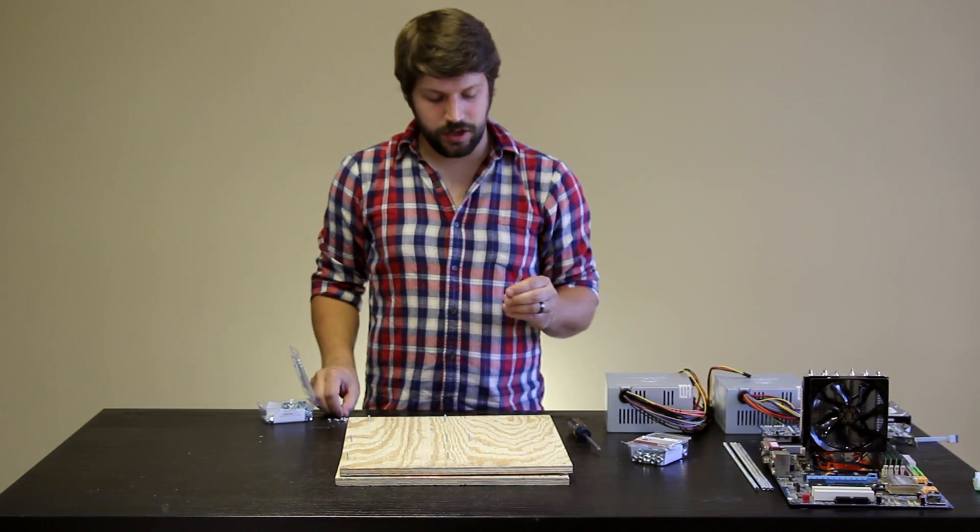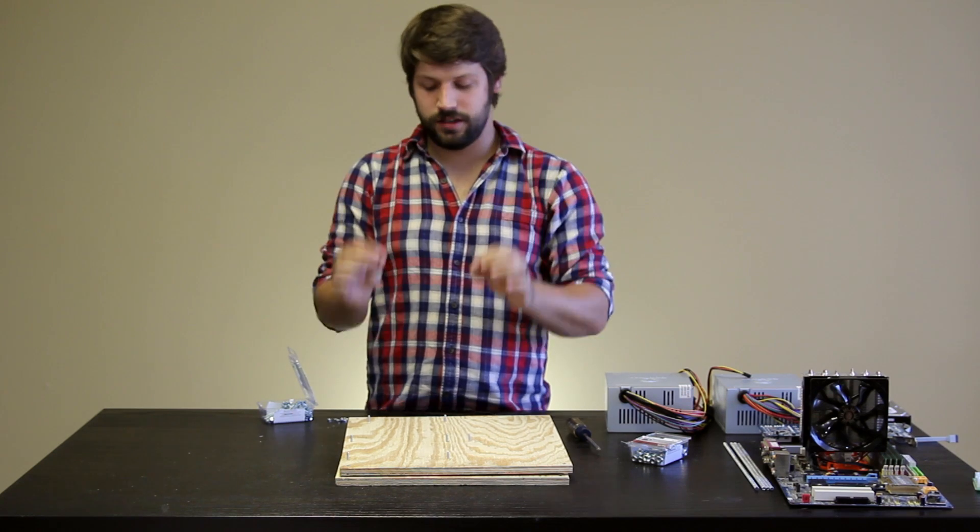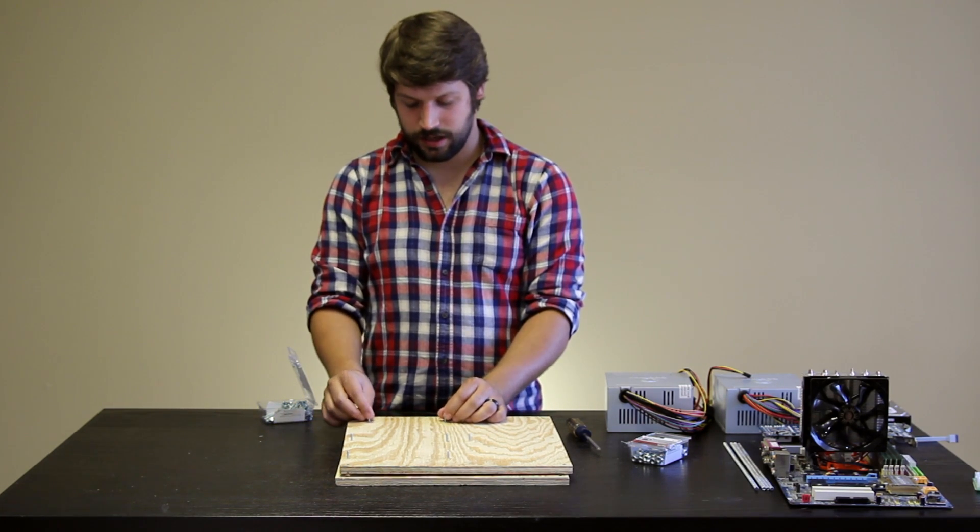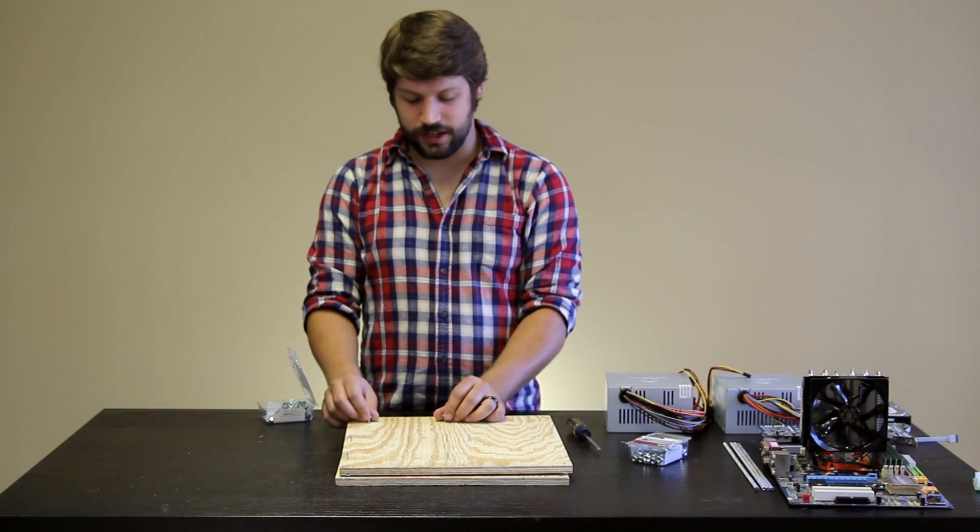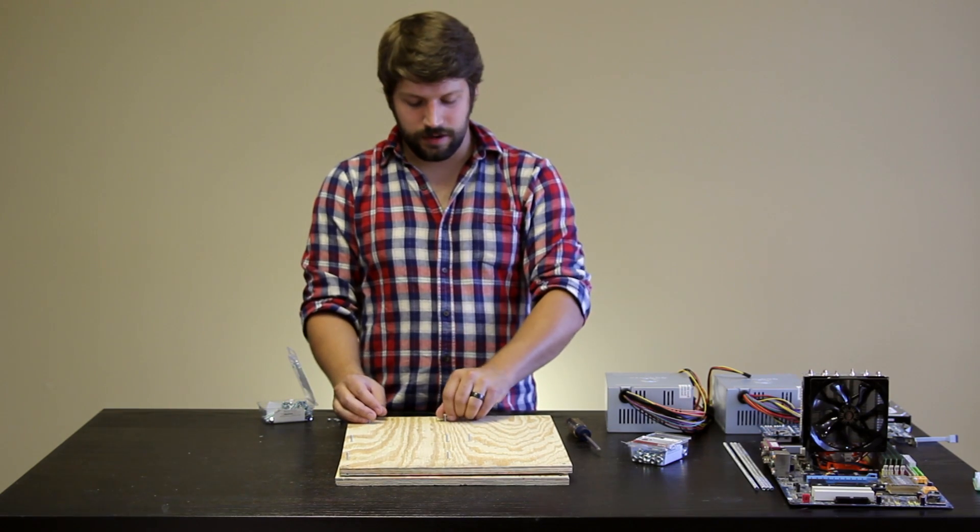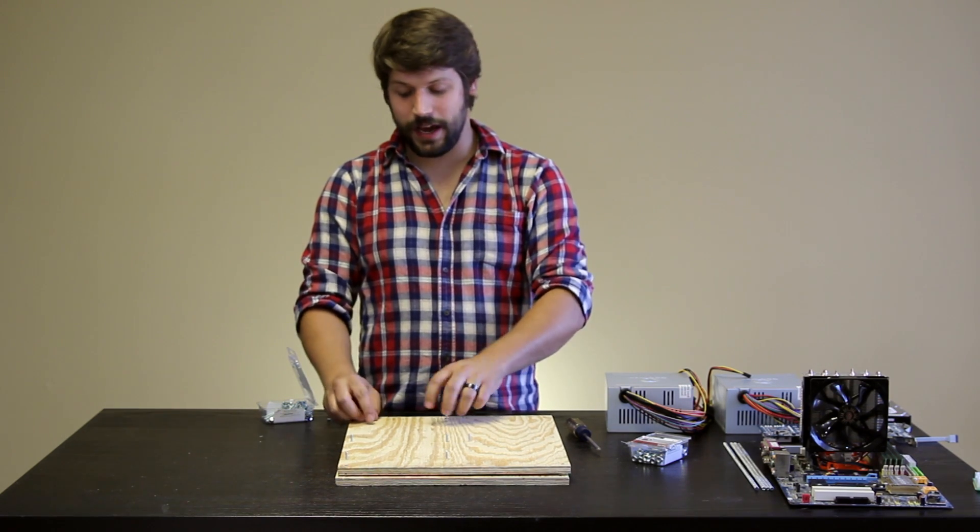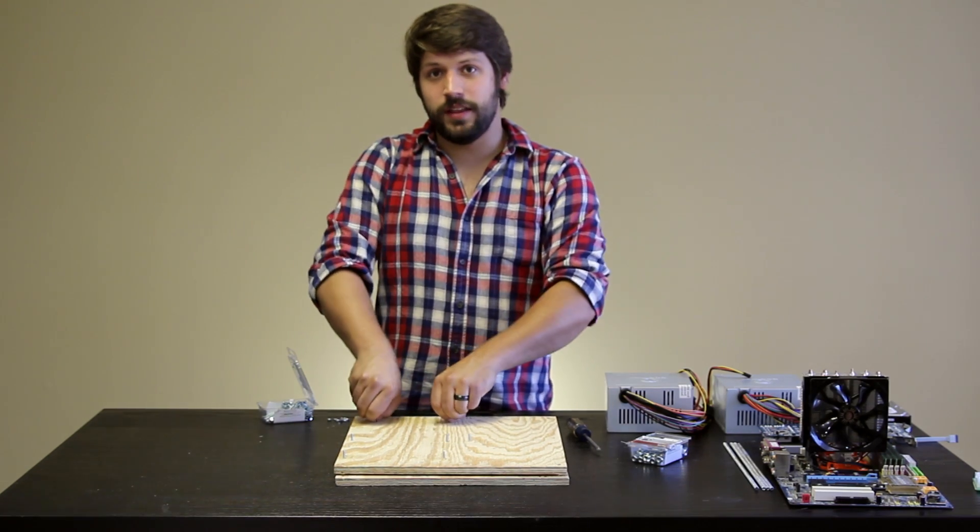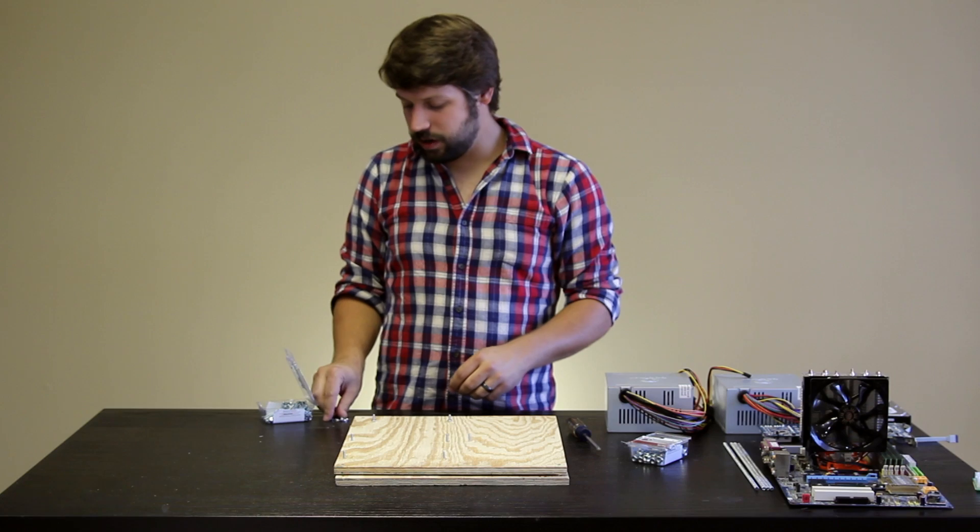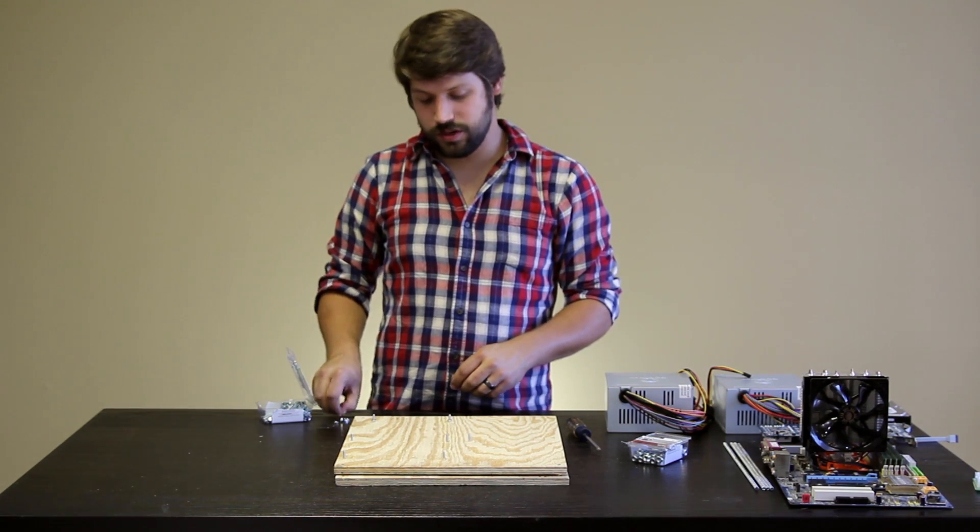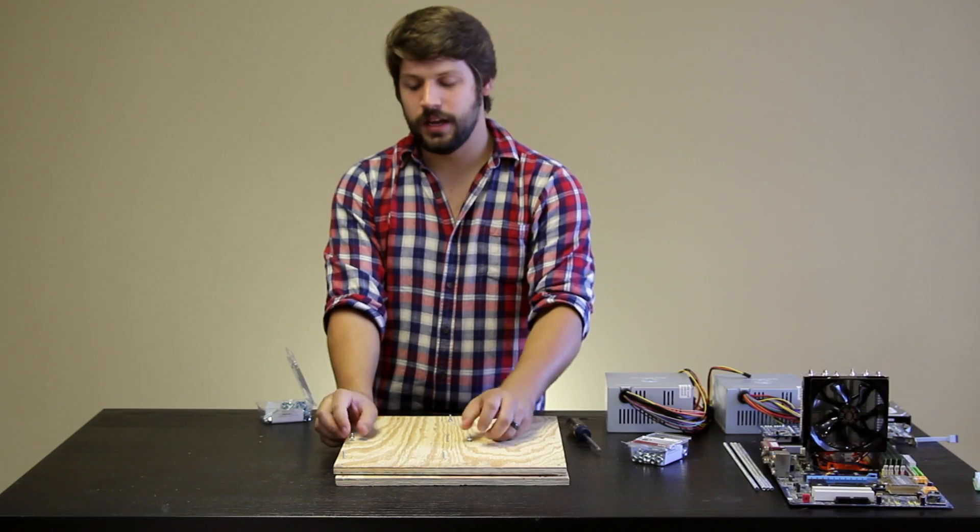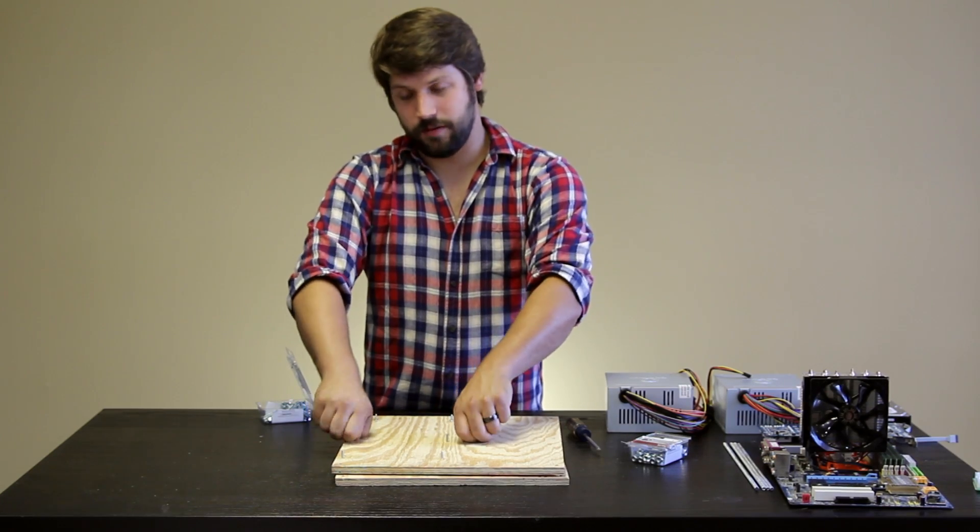And here is the first piece of plywood with all of your motherboard standoffs in it. Next, you're going to want to put at least one nut on each of these screws in order to provide a sort of standoff effect for your motherboard. Now if you have a back plate for your CPU cooler that is exceptionally large, you may want to do two or three screws depending on that particular cooler. However, mine does not require that, so I'm just going to put one for now.